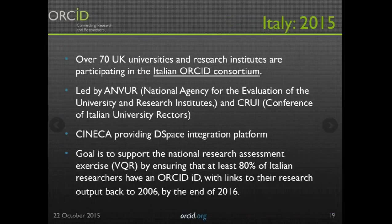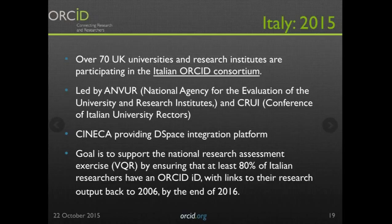In Italy, they launched a national consortium in July this year. There are now 74 Italian universities and research institutes participating. This is led by one of the ministries in Italy and involves the CRUI — the Conference of Italian University Rectors — giving both government and high-level university participation. They are using one platform for integration built by Cineca, a government organization, and are using a DSpace CRIS. Universities don't have to build something on their own — they plug into that platform to enable connections between their researchers and their identifiers. It's a fairly centralized approach to engaging with ORCID.